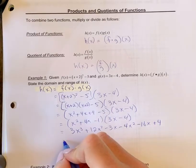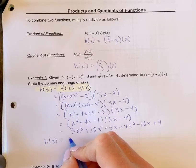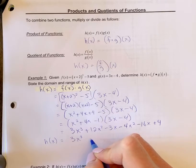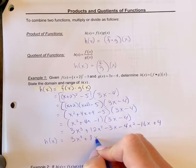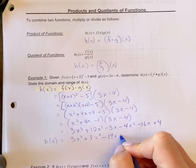Minus 3x minus 3x minus 4x squared minus 16x plus 4. And now you're going to combine like terms. So your final h(x) graph is going to be equal to 3x cubed plus 8x squared minus 19x plus 4.